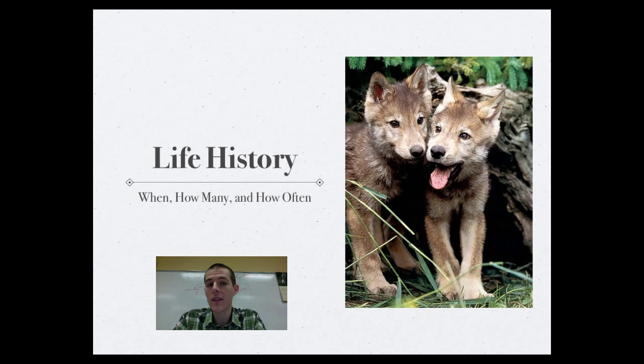How many times within its life will it reproduce? So one shot, one time, or several times? And how many kids will it have each time it does reproduce? So is it going to have big litters, thousands of eggs, whatever, or just like one baby? So when we talk about life history, it's all about when they reproduce, how many offspring they have, and how often they do it.